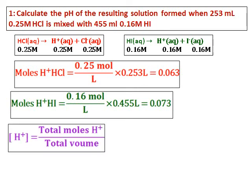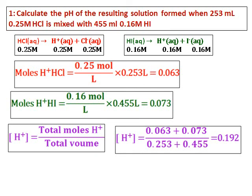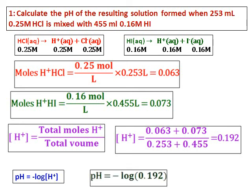The concentration of H⁺ after mixing equals the total moles of H⁺ divided by the total volume in liters. Combining the two moles and the two volumes, we get the concentration of H⁺ in the mixed solution. pH is then calculated as the negative log of [H⁺], giving pH = 0.723. As a check: since it's an acid solution, the pH should be less than 7 — which it is.